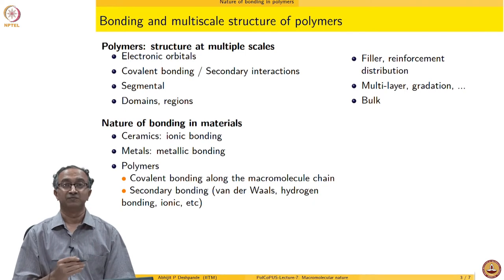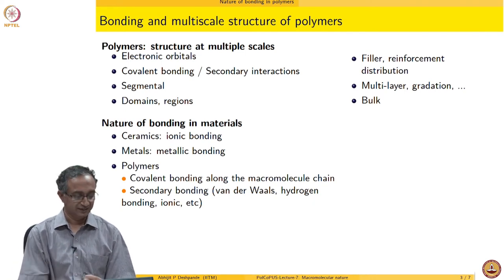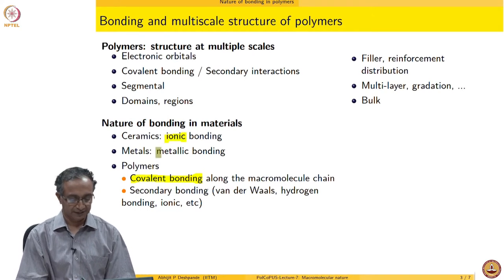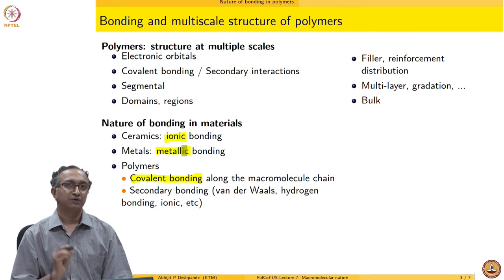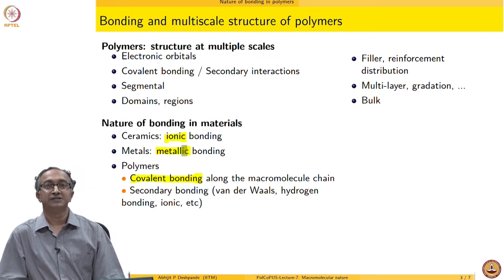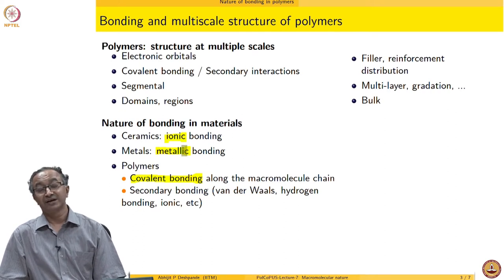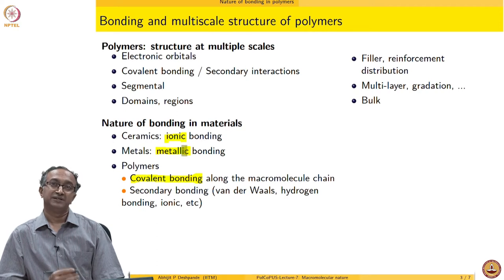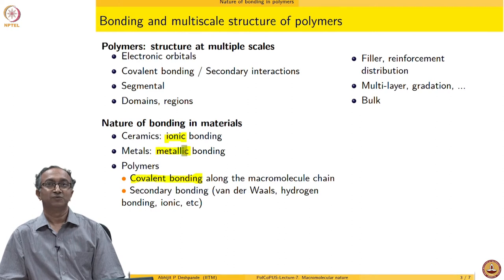Let us ponder more about the macromolecular nature. What is the nature of bonding which builds a macromolecule? As we said, it is covalent bonding. How does this contrast with some other materials? In ceramics, it is ionic bonding. In the case of metals, it is metallic bonding. You can look up what is the energy associated with each of these bonds — this gives you an idea of how much energy is required to break the bond. So, does it mean that if metallic and ceramic bonds are stronger, they will require more energy to break? Then why is it more difficult to break down and degrade a macromolecule?